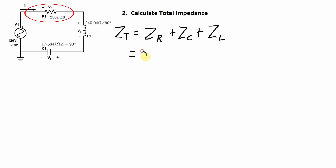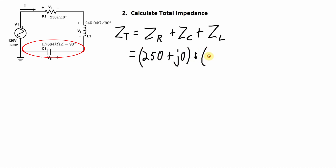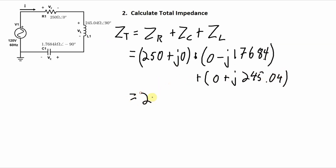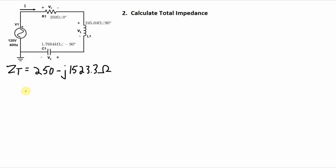The impedance of the resistor is 250 + j0 ohms. The impedance of the capacitor is 0 − j1768.4 ohms. And the impedance of the inductor is 0 + j245.04 ohms. The real parts add together — that's just the 250 from the resistor — and the imaginary parts add together, giving −1768.4 + 245.04, which gives −j1523.3 ohms. We should also convert this into polar coordinates because that will make the next calculation easier.